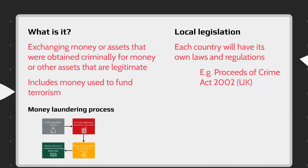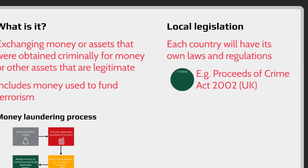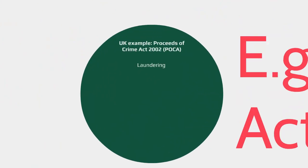What the Proceeds of Crime Act 2002 did was create a single set of money laundering offences applied throughout the jurisdiction. The act created three criminal offences: laundering, failure to report, and tipping off.